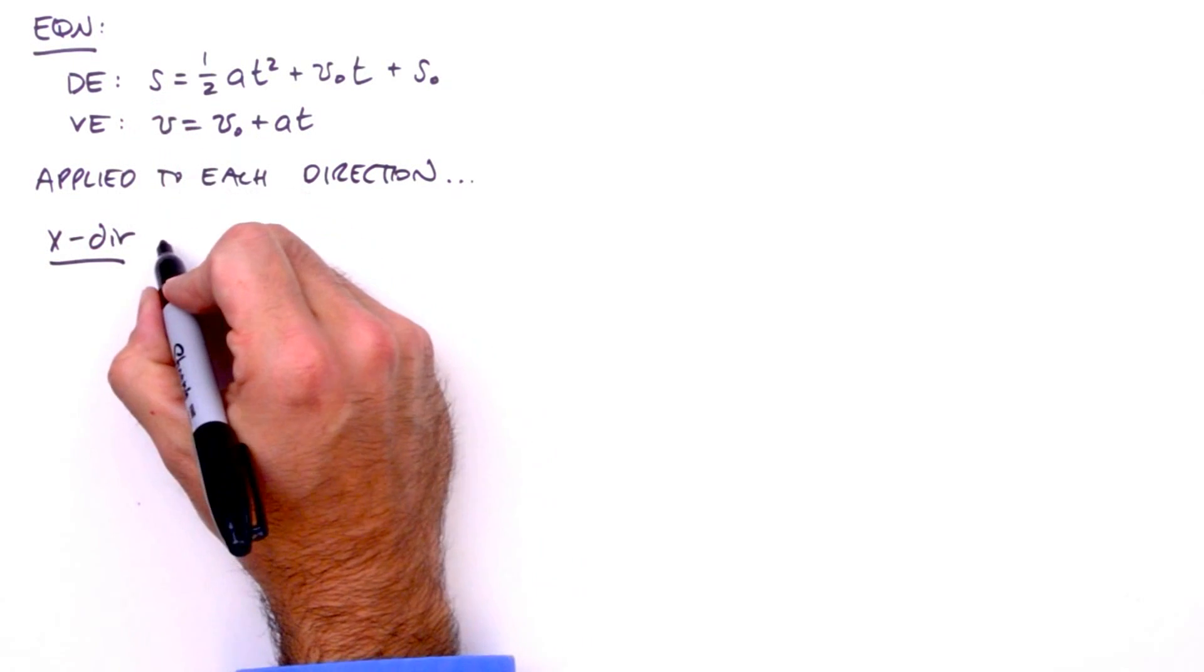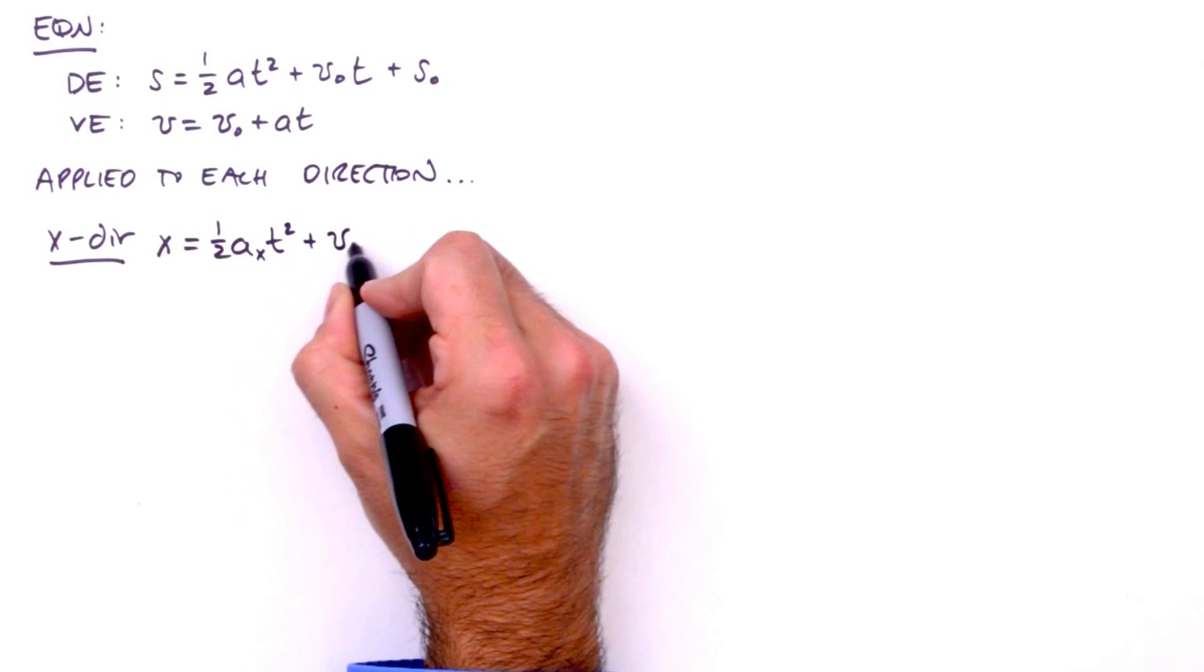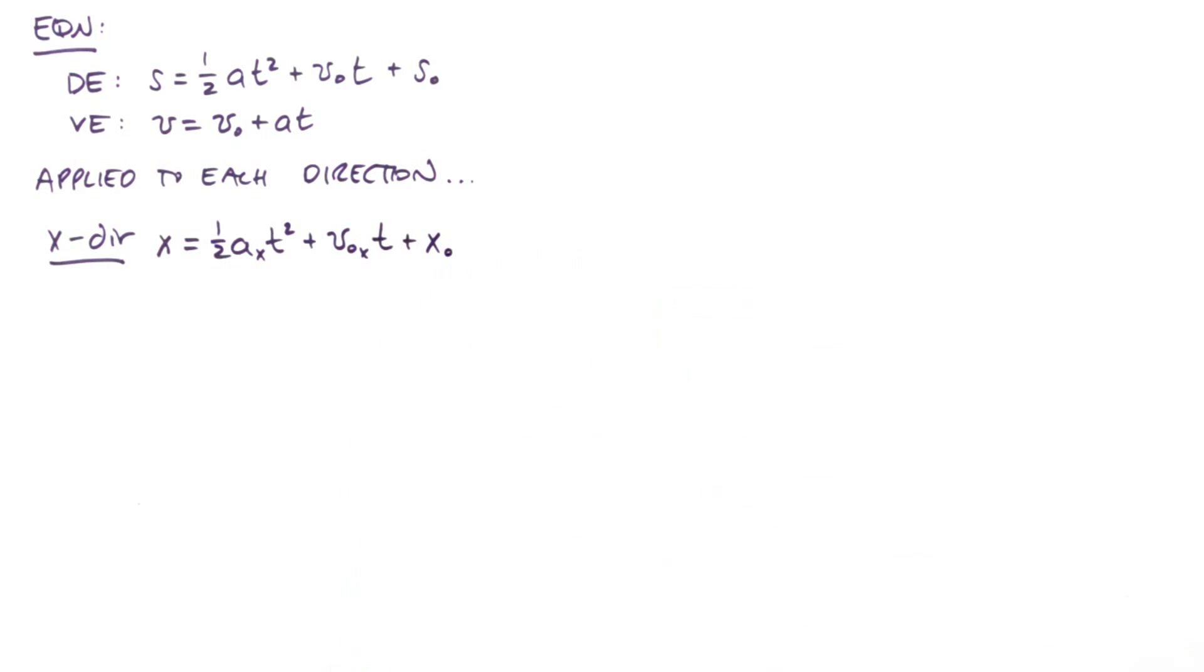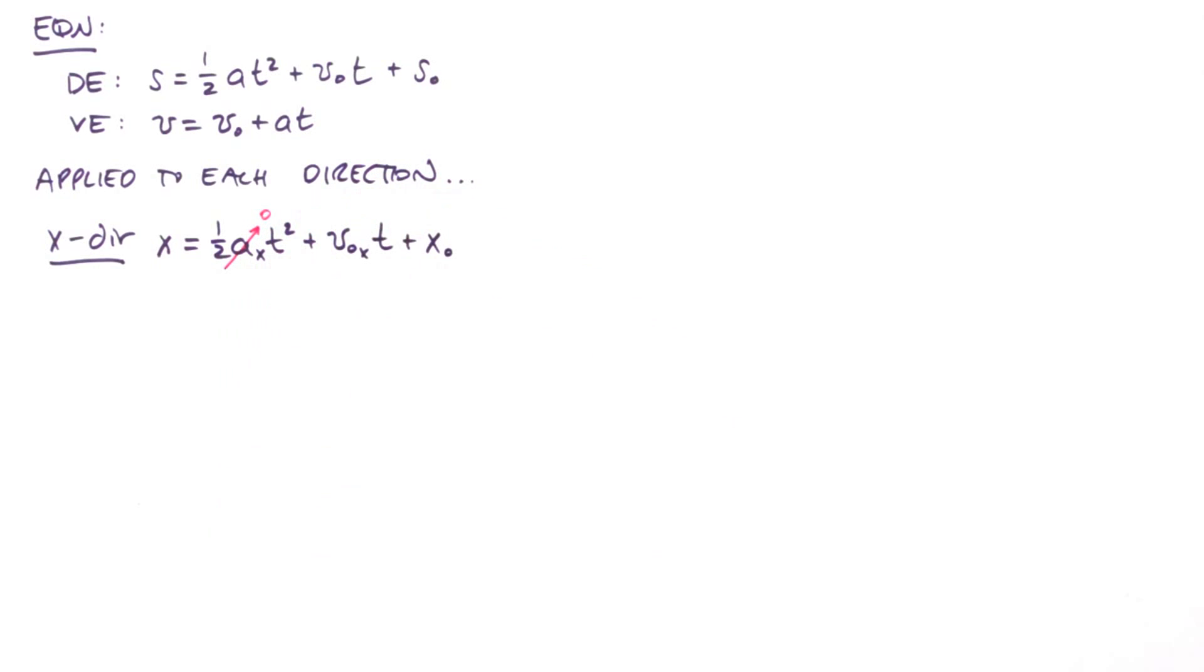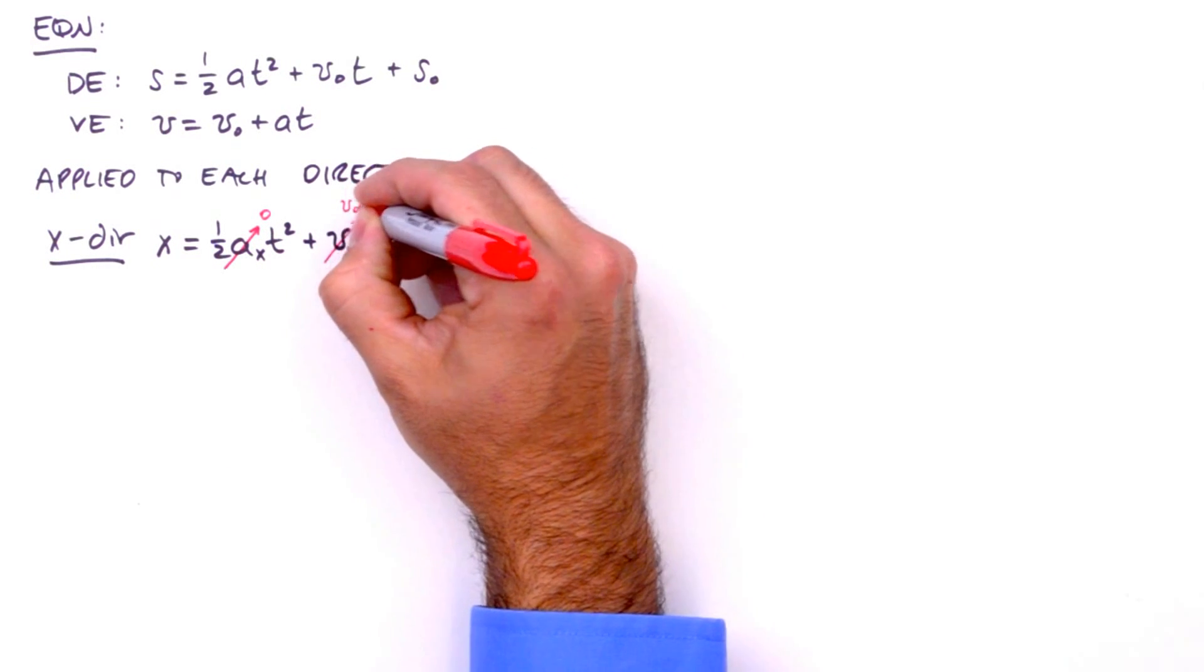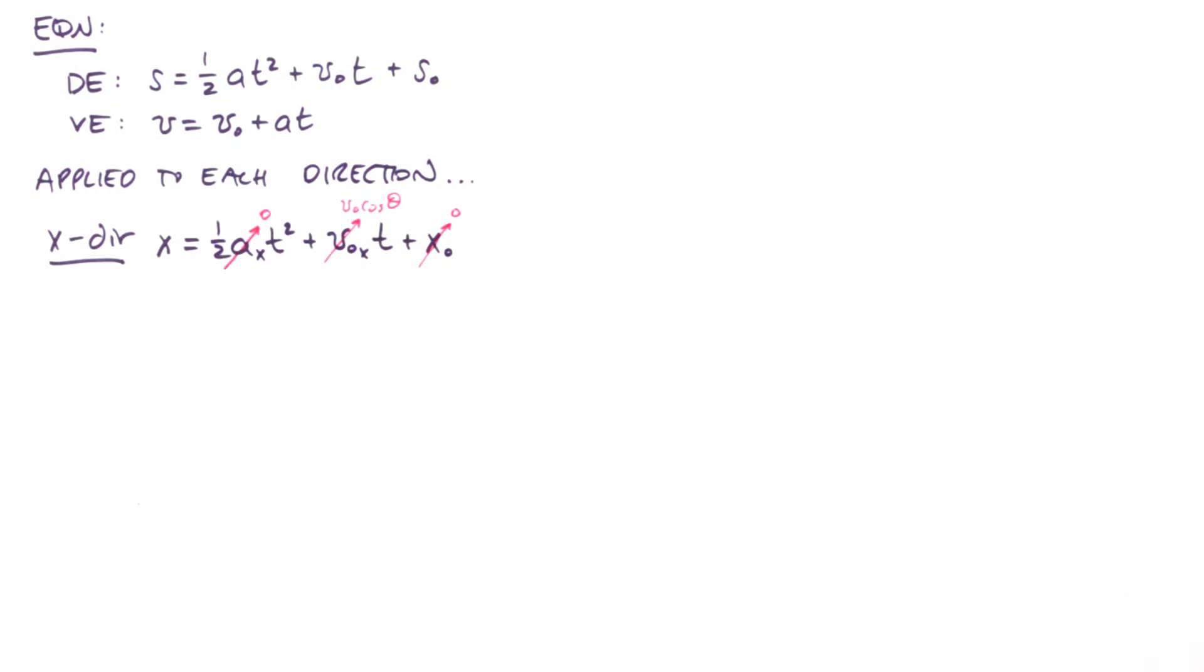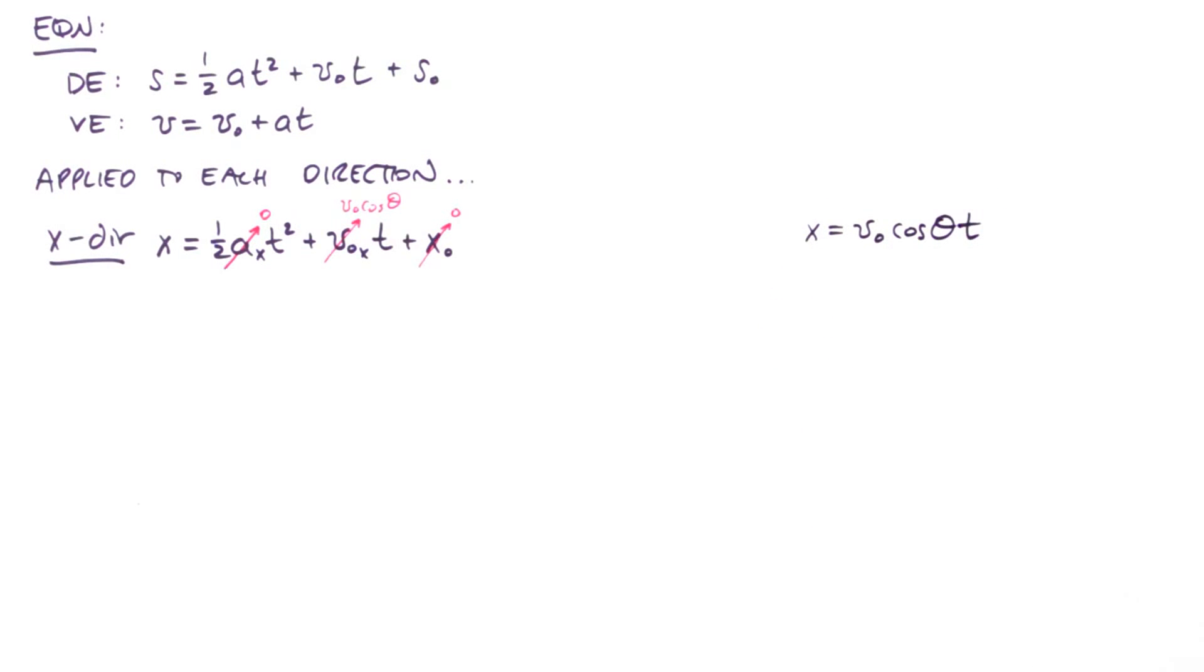So, in the x direction, starting with the displacement equation, instead of s, we have x equals one-half a sub x, that's the acceleration in the x direction, times t squared plus v sub o sub x, the x component of the initial velocity, times t plus x sub o, the initial horizontal position. Before moving on, we're going to simplify this equation. A projectile's horizontal motion is unaccelerated, so we can set a sub x to zero. We've defined v sub o sub x as v sub o cosine theta, and x sub o is zero. So, the displacement equation in the x direction simplifies to x equals v sub o cosine theta t. We'll label this equation one and set it aside for now.